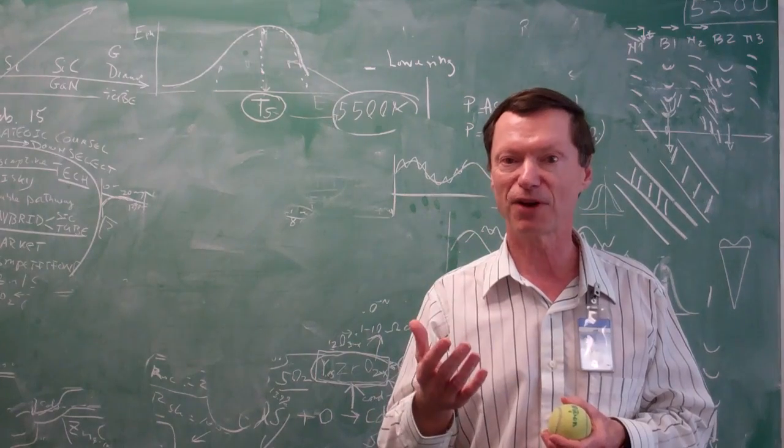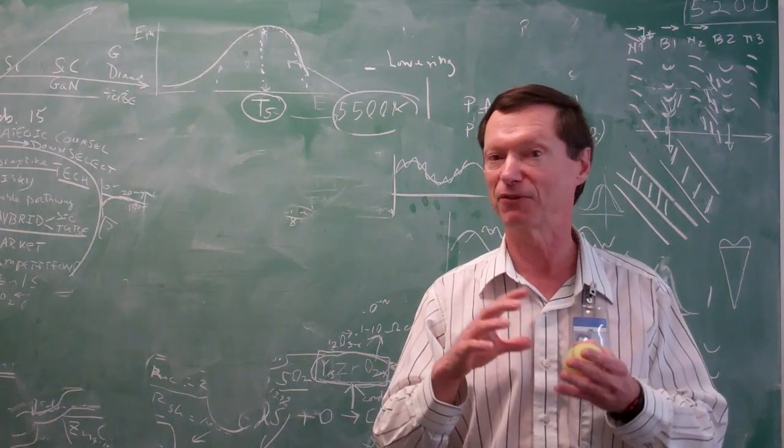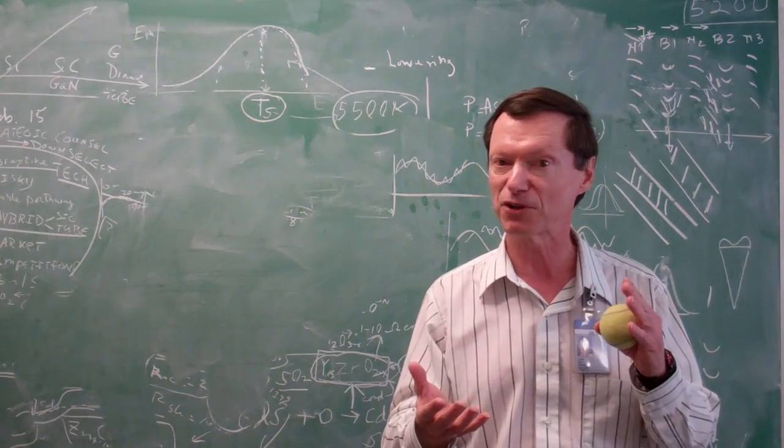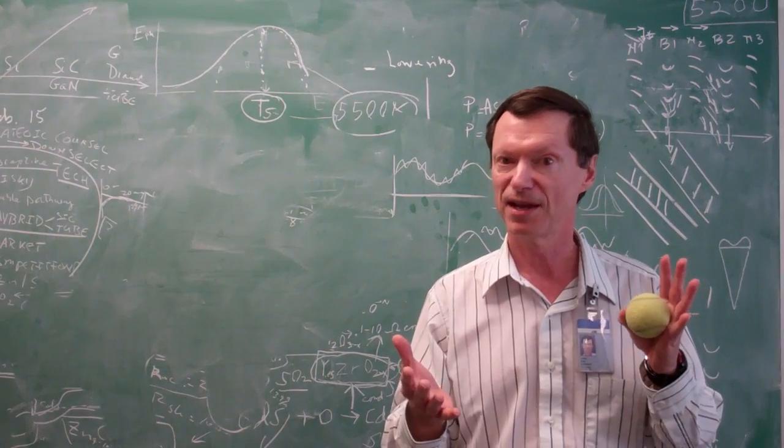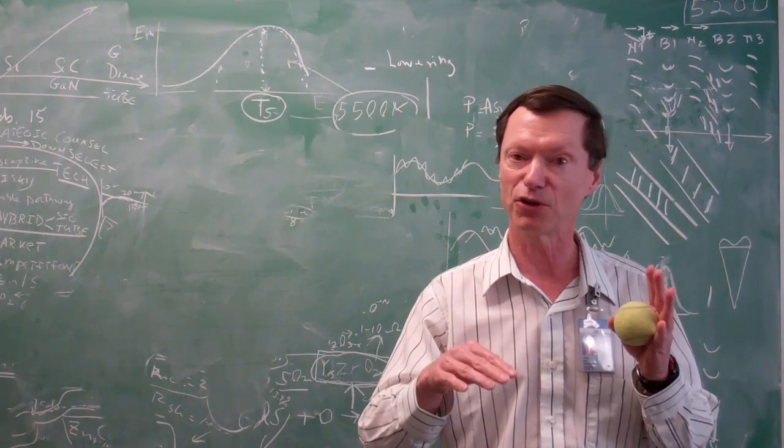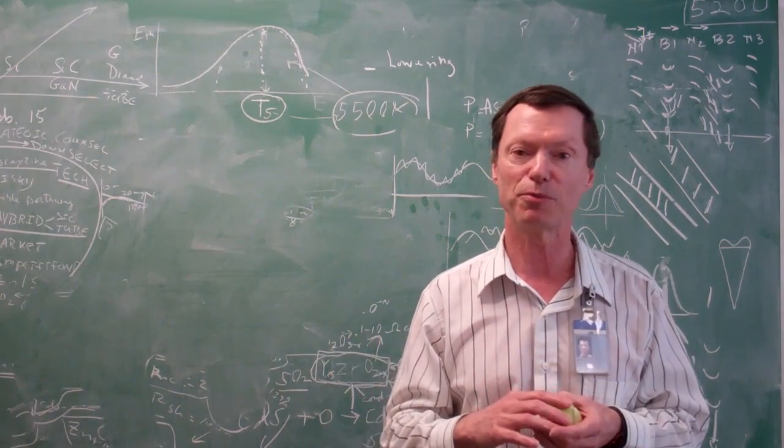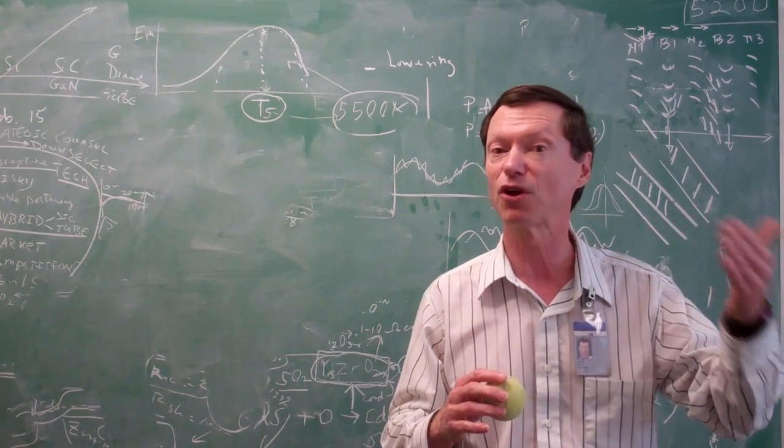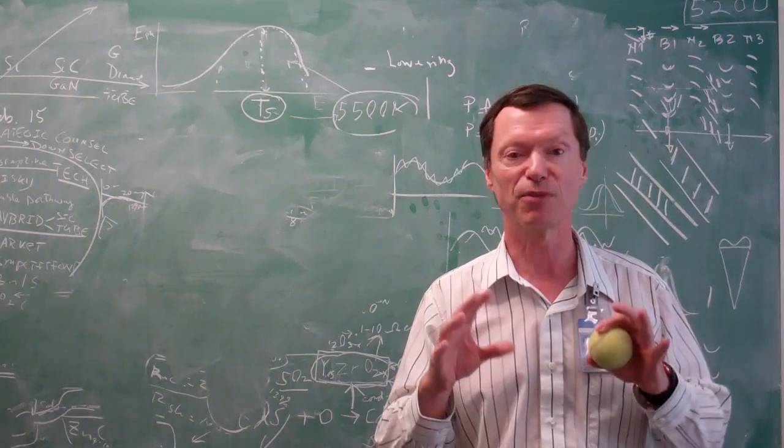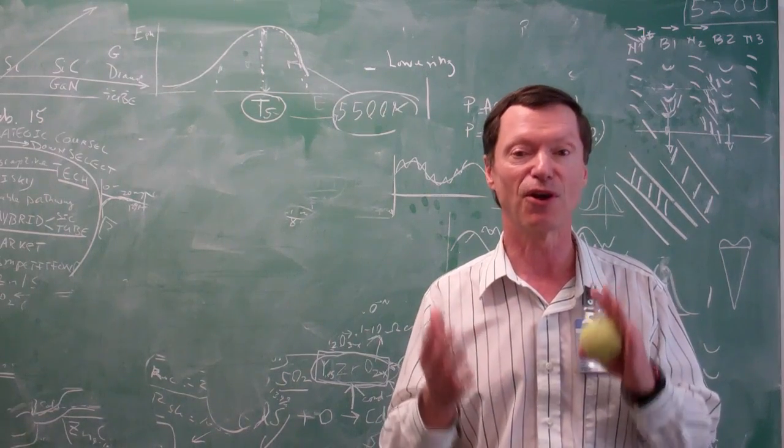Now, escape velocity depends on the amount of gravity. So it's 25,000 miles per hour on Earth. But it's a lesser amount on the Moon because gravity is less on the Moon. Or if you went to planet Jupiter, the escape velocity would be a much larger number because it's a much larger planet with much larger gravity.